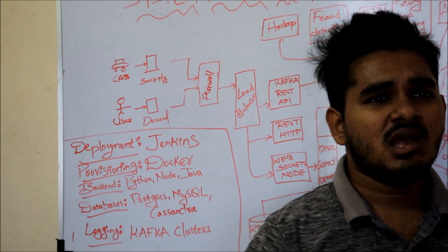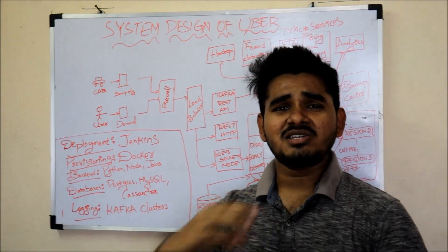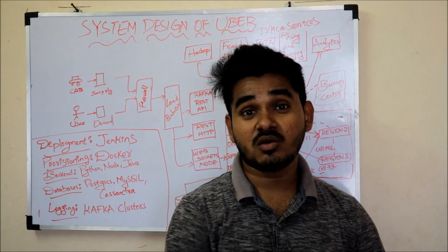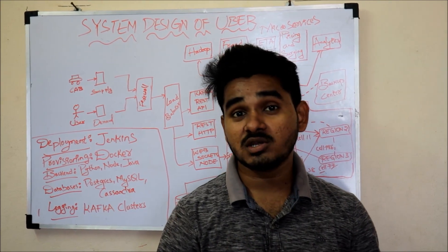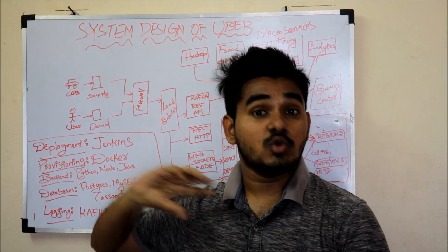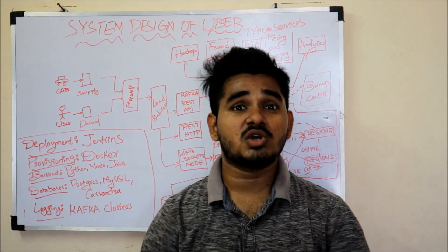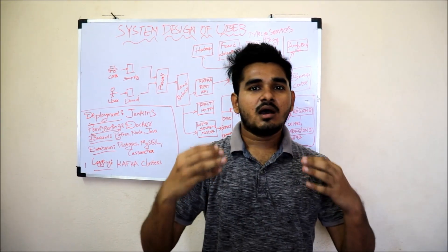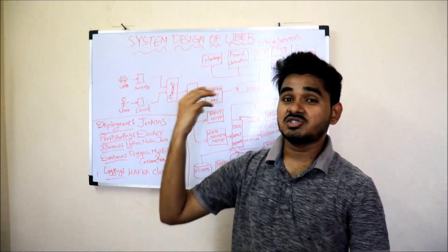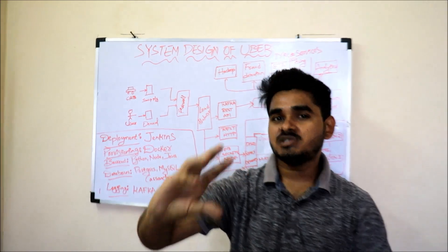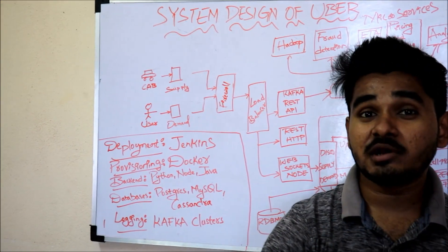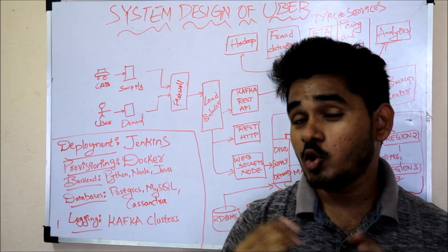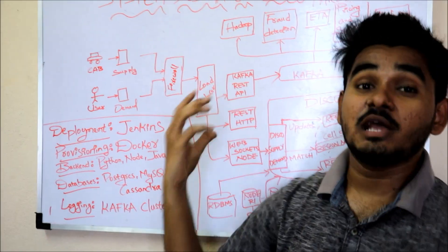What actually is system design? System design is like understanding the bigger picture of a product. When you are involved in building a particular product and you want to understand that bigger picture, that is what system design is. So let me take an example of Uber system design — how system design can be structured in such a way that your product can be successful. Uber is very successful, and it is only because of its system design.